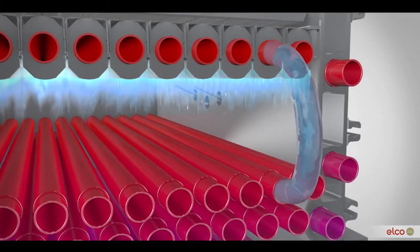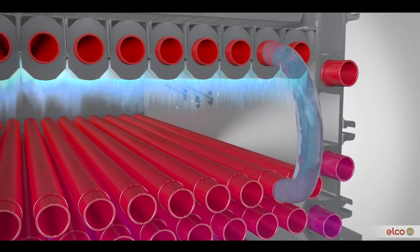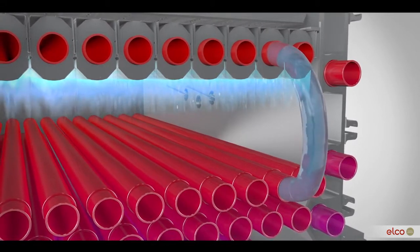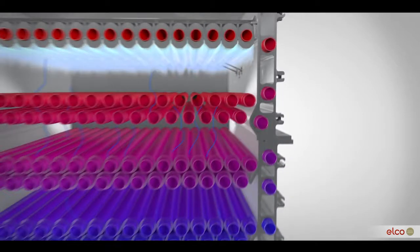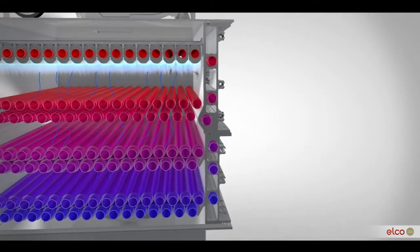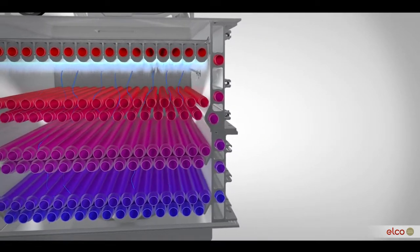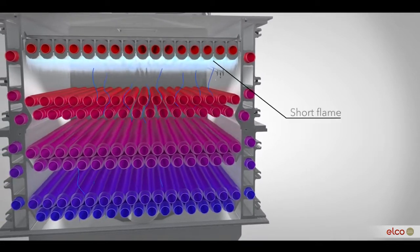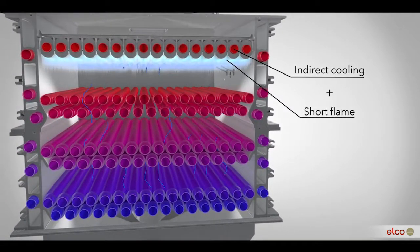The heating water passes from the heat exchanger through the burner, creating an indirect cooling effect on the flame and reducing the flame temperature. By cooling the flame, the reaction between nitrogen and oxygen is limited. Combining a short flame with indirect cooling of the flame